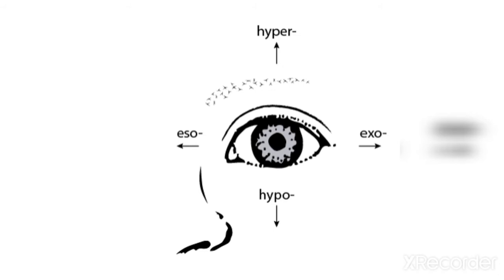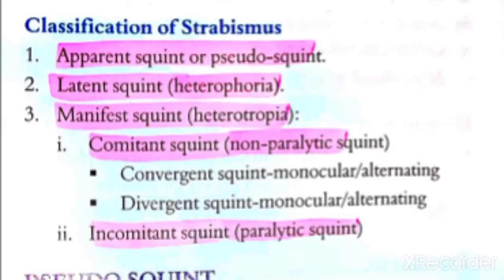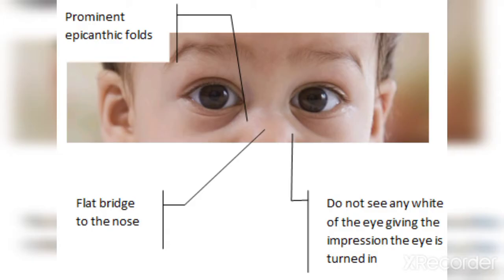Now we have a classification of squint. We have two main types: latent squint and manifest squint. The third type is pseudo squint, also called apparent squint. We call it pseudo squint because the eye appears squinting due to epicanthic folds that are prominent and a flat nasal bridge, giving the false appearance of a squint.